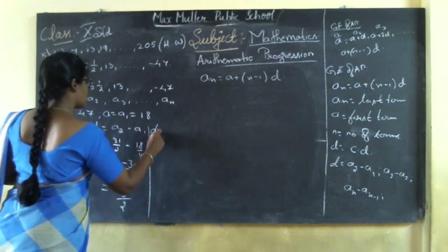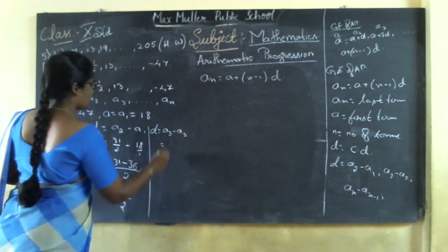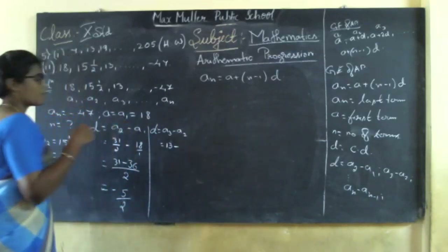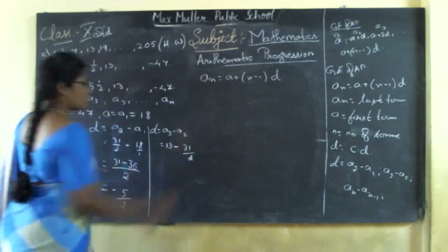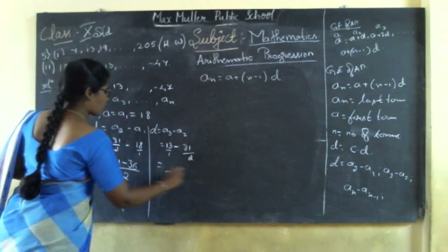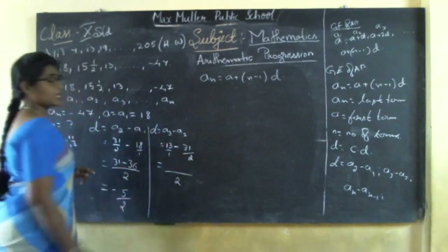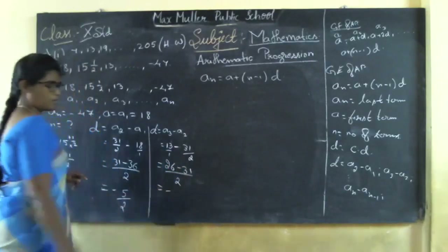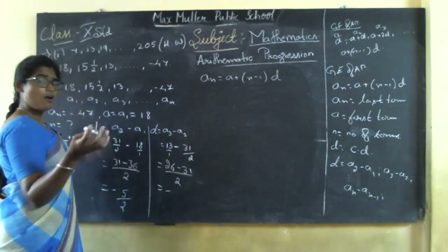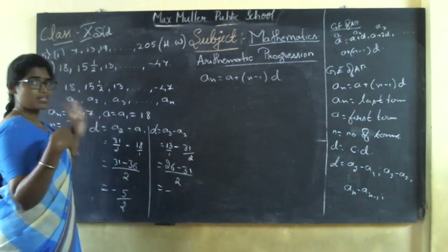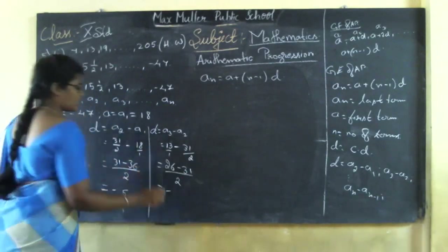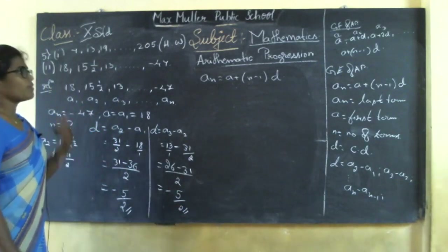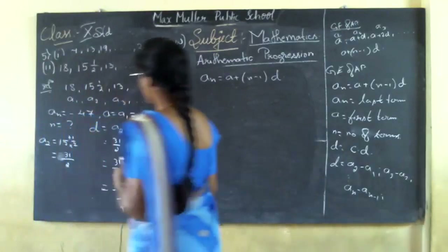Let me check with another pair: d = a3 − a2 = 13 − 31/2 = (26 − 31)/2 = −5/2. The common difference is the same for both pairs. Now let me substitute everything in the formula to find the value of n.